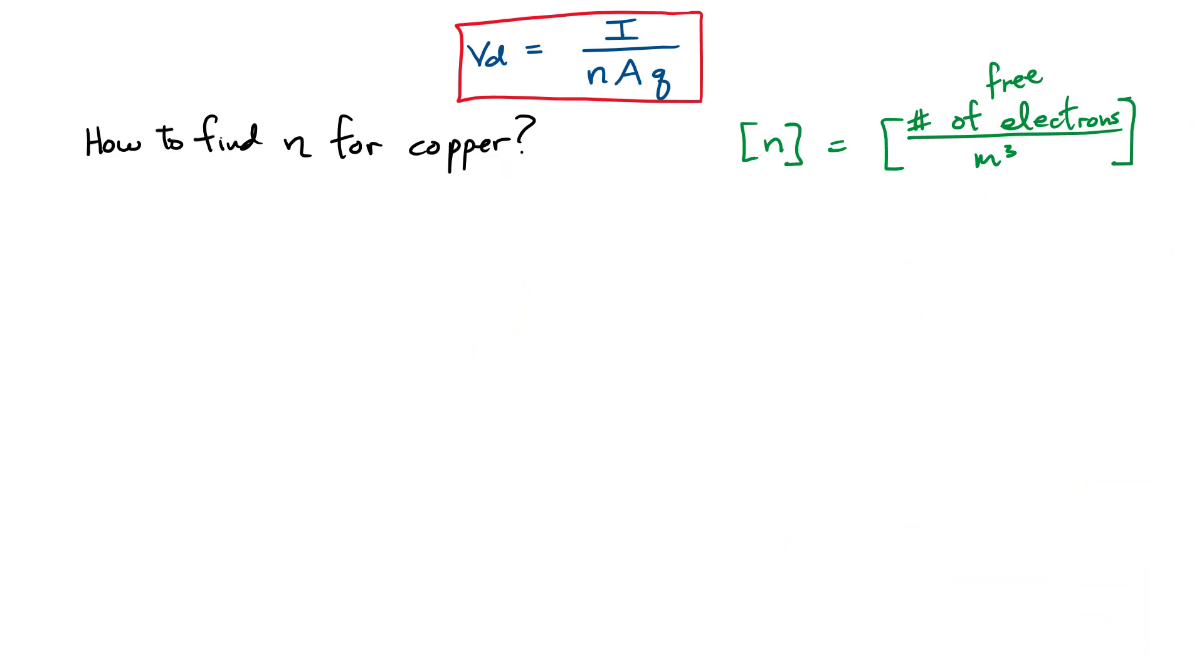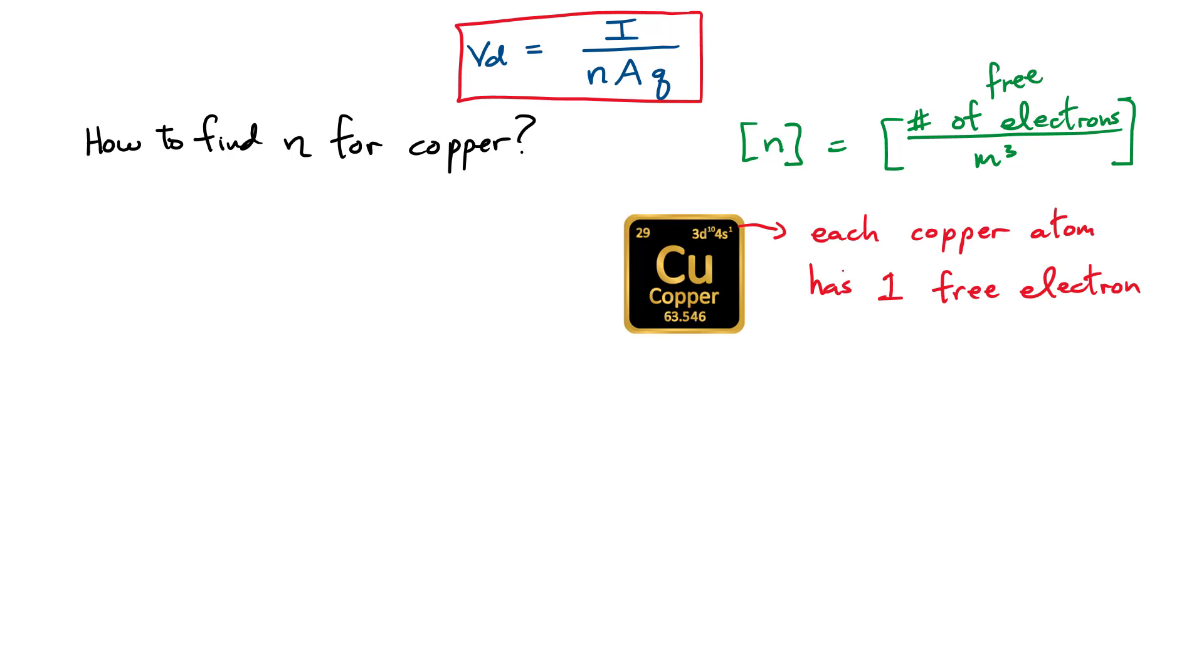To be able to calculate my drift velocity, I need to know current, area, charge, and also this little n. This little n refers to the number of free electrons, the ones that are able to move when there is an electric field present per meter cubed of copper. In order to calculate that, you have to look up some data for copper. Pull up, for example, the properties of each copper atom. Each copper atom has one of these electrons that's far away from the nucleus. So that means that each copper atom inside my volume has one of these free electrons. So the goal is to determine how many of these atoms we have per meter cubed.